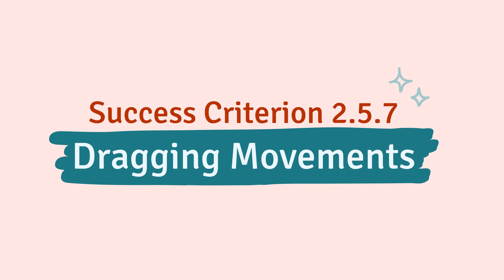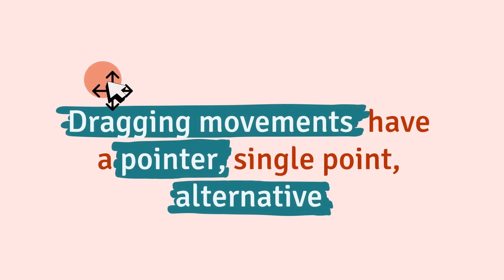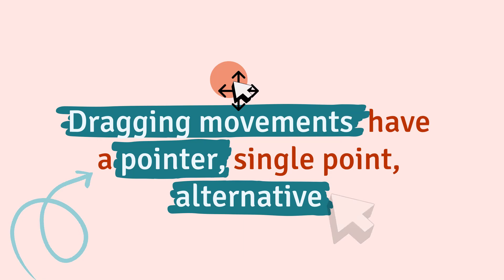Success Criterion 2.5.7 dragging movements is about making sure that any function achieved through a dragging movement has a pointer-based alternative that only requires one point of contact with the screen, like a single tap.